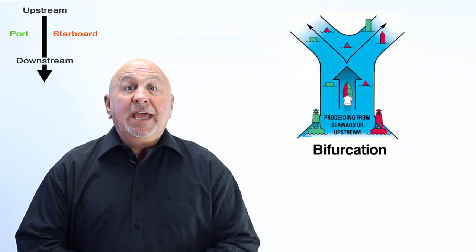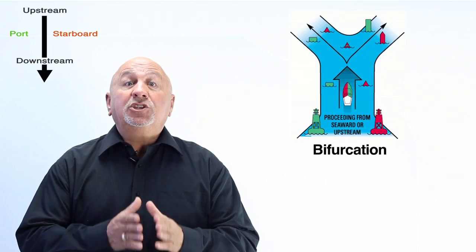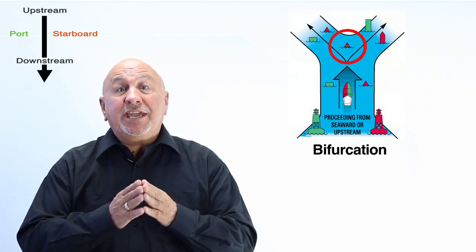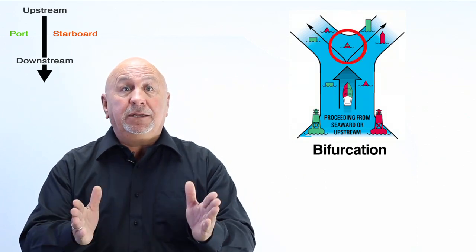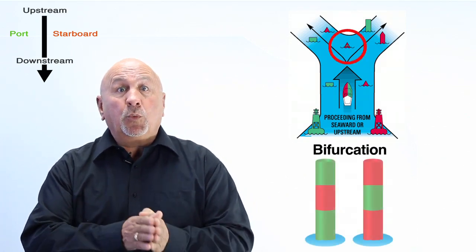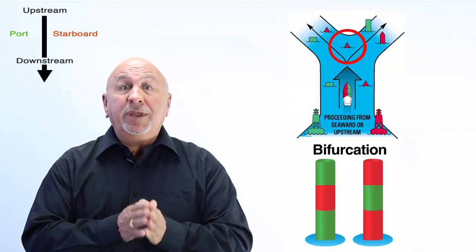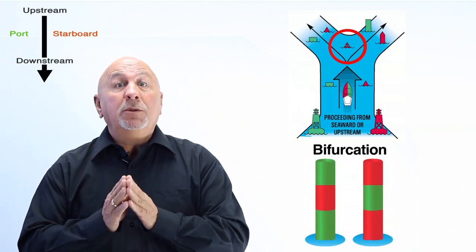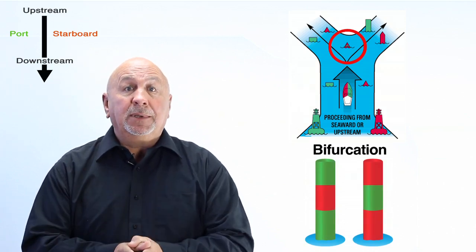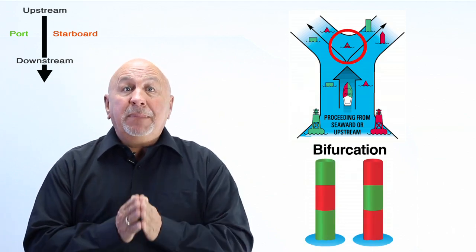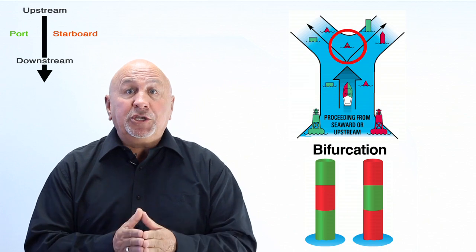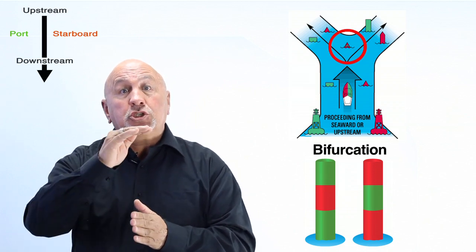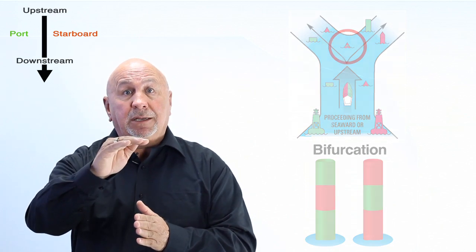Bifurcation. A bifurcation buoy is used to mark a point at which a channel is divided. You may pass this buoy, which has red and green bands, on either side when moving upstream. The main or preferred channel is shown by the color on top of the band.